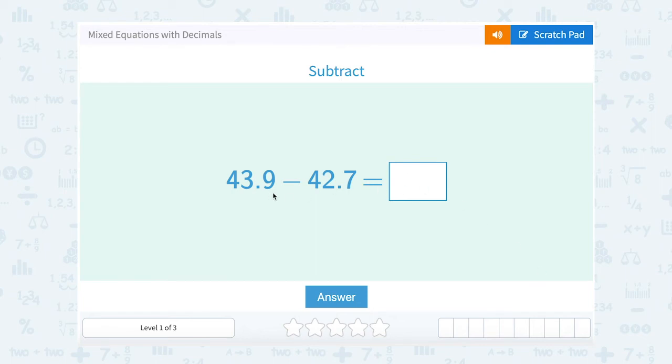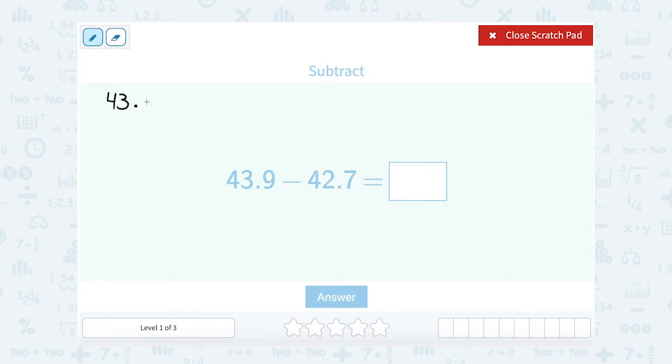Let's take a look at mixed equations with decimals. They asked me to subtract 43.9 minus 42.7. When I'm subtracting or adding with decimals, I like to line them up so I can make sure I'm putting the decimal point in the right place. So 43.9 minus 42.7. Notice I'm lining up the decimal point in those two numbers, and I'm also going to line up the decimal point in my answer.